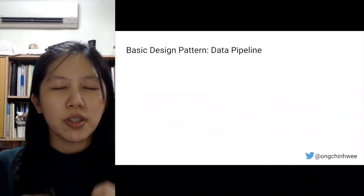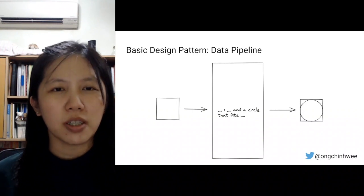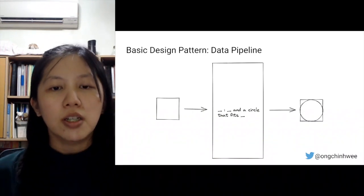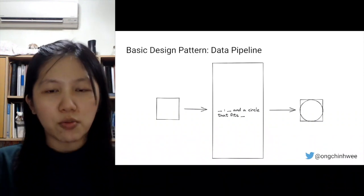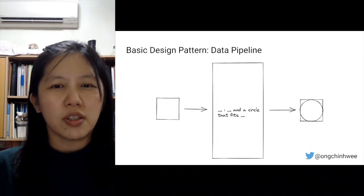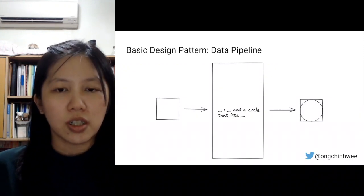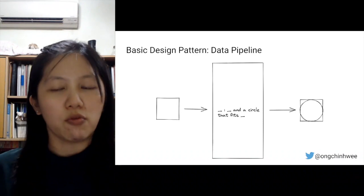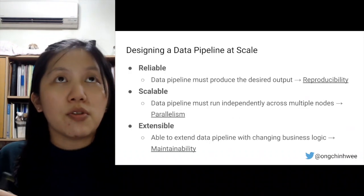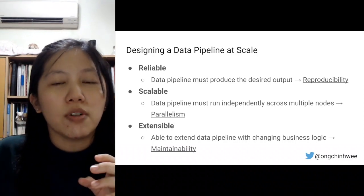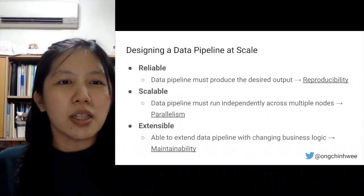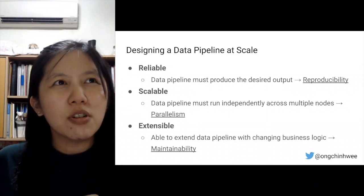When we talk about designing data pipelines, we need to consider the basic data pattern. We have an input, an operator, and an output. It looks pretty straightforward — when we have an input, an operation, and a readable output. But when we design data pipelines at scale, it gets a little bit more tricky.